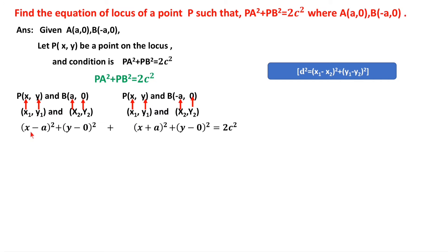Substituting, PA² = (x - a)² + (y - 0)², and PB² = (x + a)² + (y - 0)², and this equals 2c². Now (x - a)² is in the form of (a - b)², which expands as a² + b² - 2ab, giving x² + a² - 2ax + y².